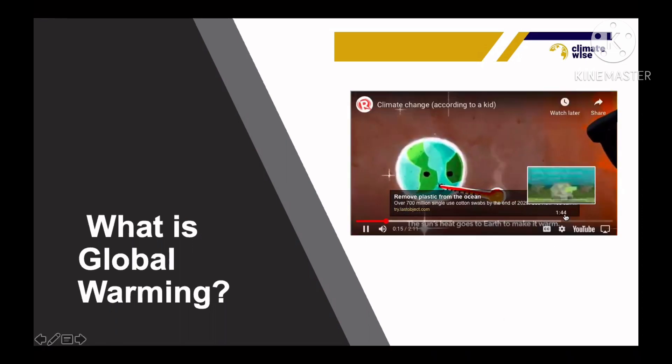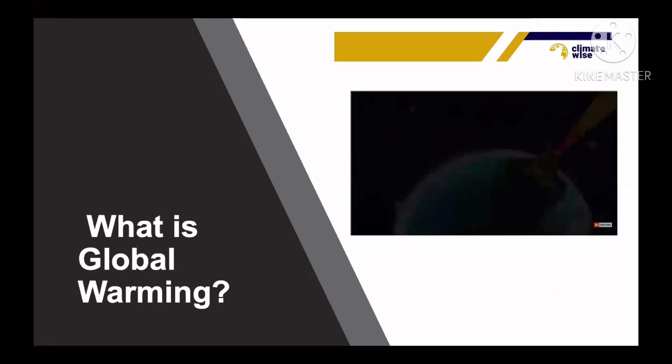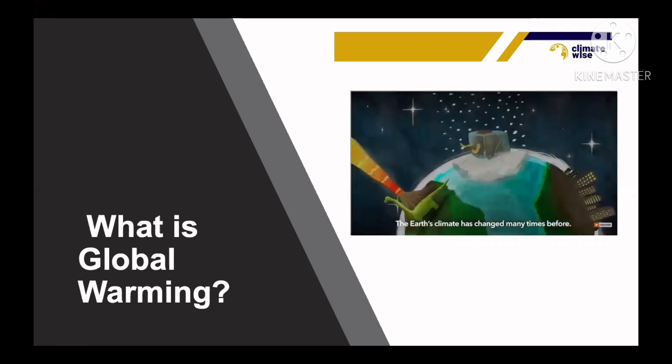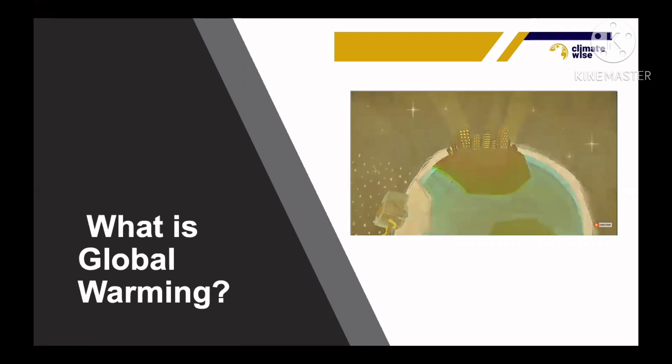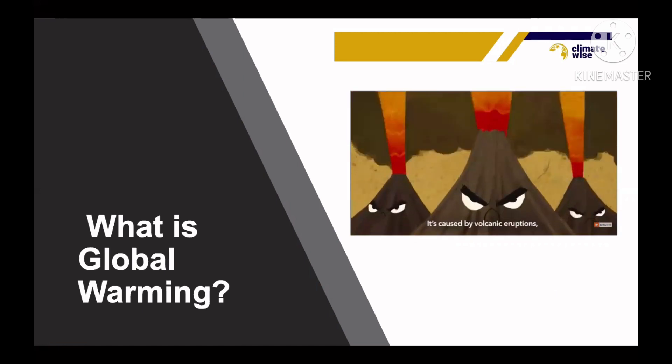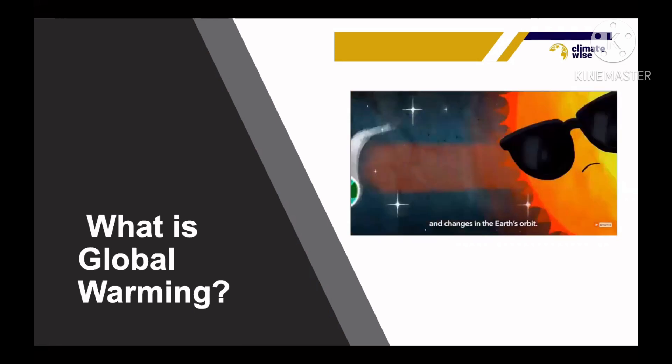The sun's heat goes to earth to make it warm. The sun's heat bounces back to space to make the earth cool. When this balance is lost, the climate changes. The earth's climate has changed many times before. This is called natural climate change. It's caused by volcanic eruptions, changes in the sun's energy, and changes in the earth's orbit.